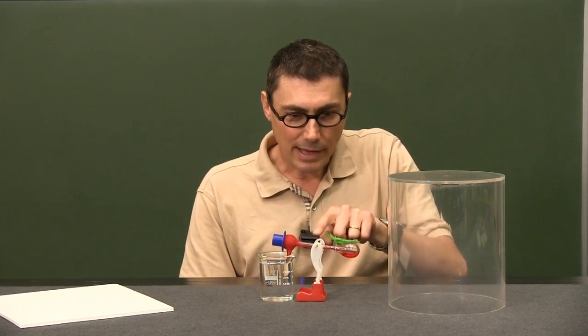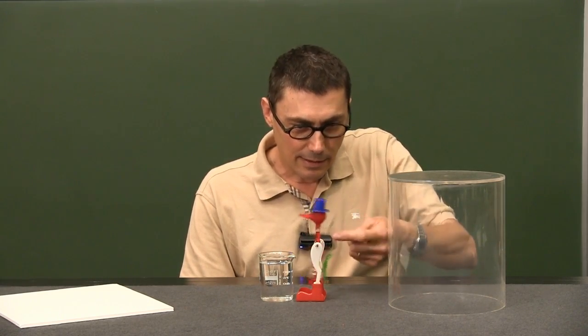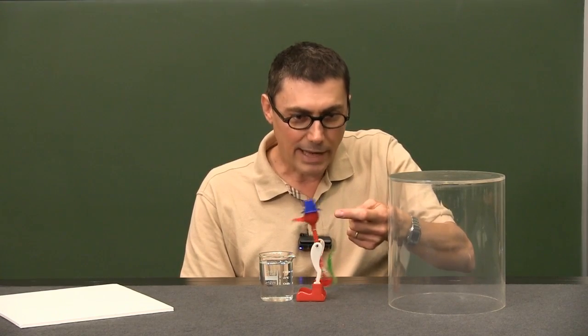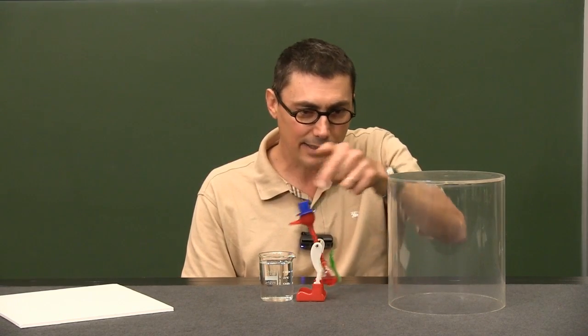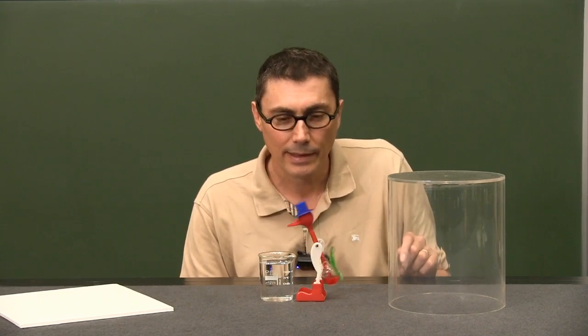Now what happens at this point here: we see that the bird's head is swinging. The bird's head is covered in felt and it's wet. Anything thrashing about in the air like that when it's wet will evaporate, and as water evaporates it takes away some latent heat with it. Therefore, the head cools down.